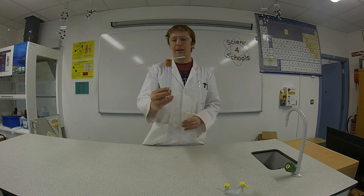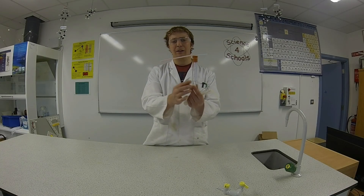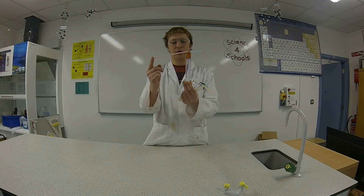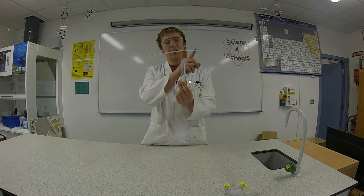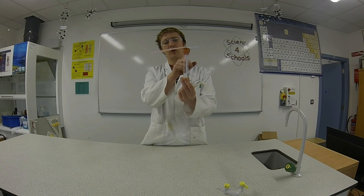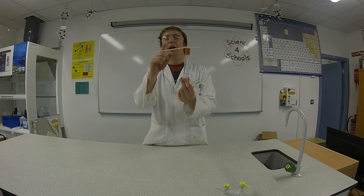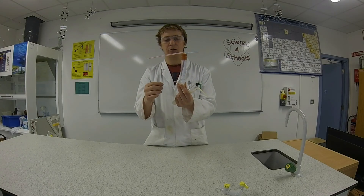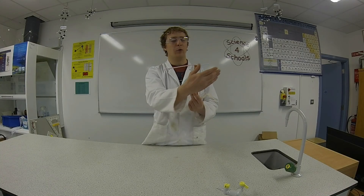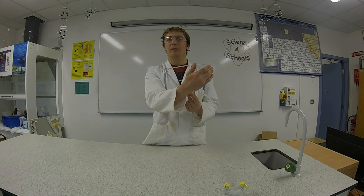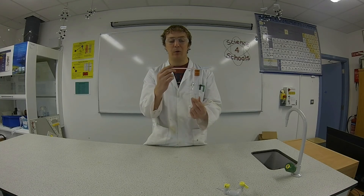For this test tube I'm going to inhale into the red straw. That's going to draw the air through the blue straw, down through the lime water, and up out the red straw. That should mean that only air from outside will pass through the lime water.